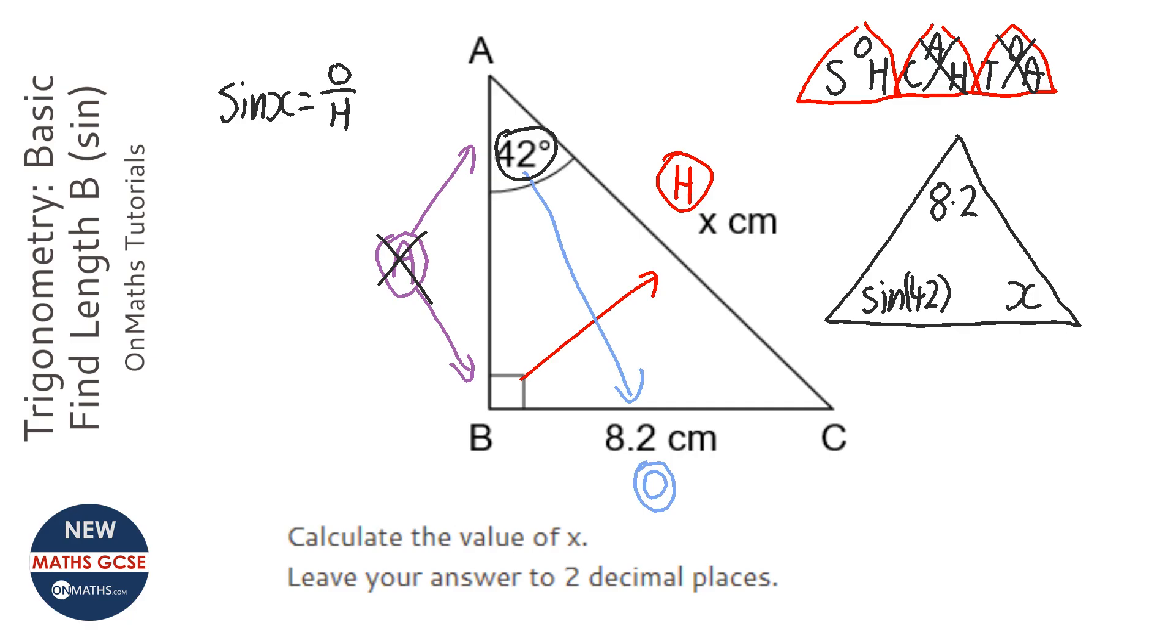Now, the way of using triangles, it's the same as a speed-distance-time triangle, or pressure, or density, or any other triangle you use. If the number is at the top and the bottom left, then to work out the one at the bottom right, you divide them. So, we're going to have X equals 8.2 over sine bracket 42.